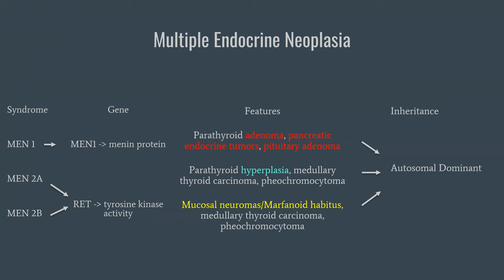Keep parathyroid adenoma straight, as it can be a little confusing with MEN2A. MEN2A and MEN2B both share a common gene mutation — the RET gene — which leads to increased tyrosine kinase activity. MEN2A features parathyroid hyperplasia. Both syndromes can cause hyperparathyroidism, but in MEN2A it's all four glands undergoing hyperplasia versus MEN1 where it's a parathyroid adenoma. MEN2A also includes medullary thyroid cancer — the calcitonin-producing medullary version — and pheochromocytoma.